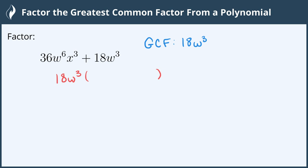So 36 divided by 18 is 2. w to the 6th divided by w cubed leaves us with three w's, so w cubed, and none of the x is canceled, so it's x to the third.